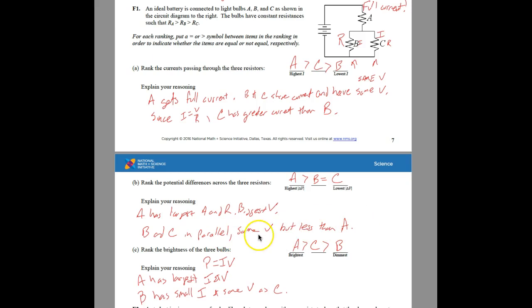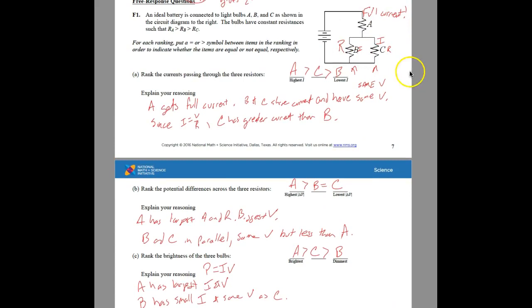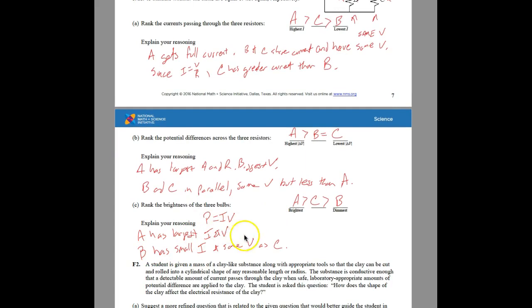They want us to rank the brightness of the bulbs. Since we know what the current and voltage is in each one, A has the largest current and voltage, and therefore it is the brightest.